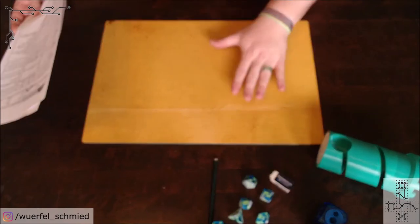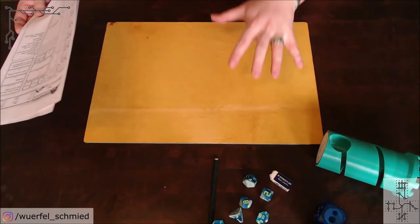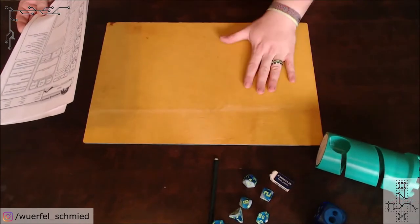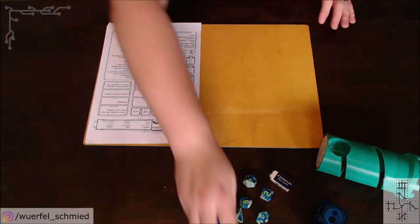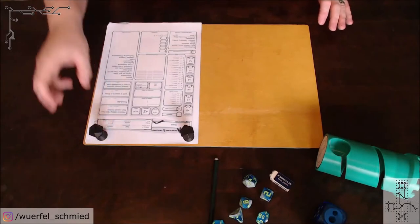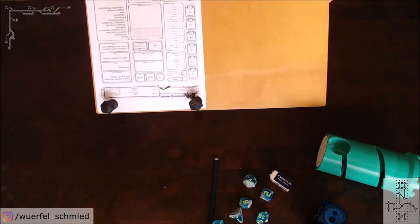We make this magnetic clipboard. So there's a metal sheet underneath. So you can put on your character sheet, grab yourself some magnets and hold it in place.